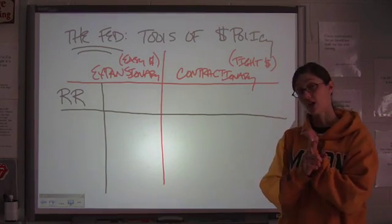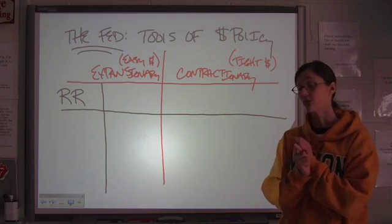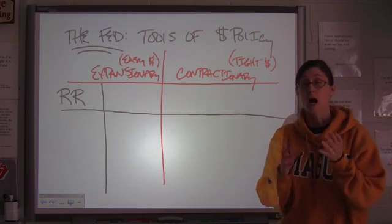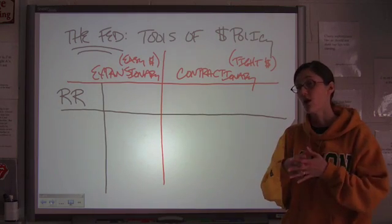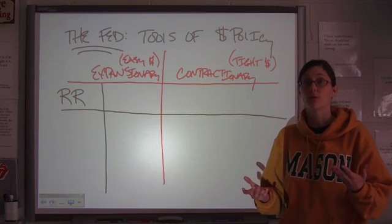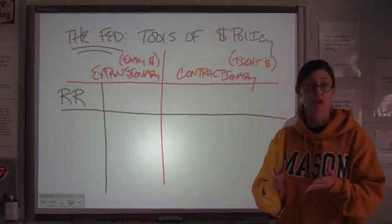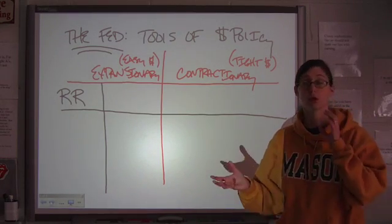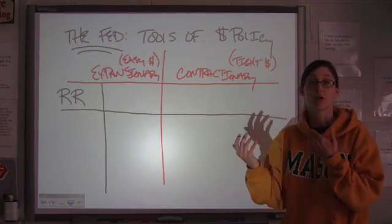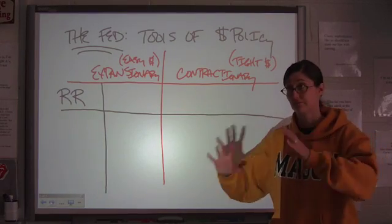So vault cash is one option, or it has to be on reserve with a Fed branch. Our closest Fed branch to where we are is in Richmond. The one you hear about most often is the Federal Reserve Bank of New York — they do a lot of major operations there because it's a very big business and commerce area.